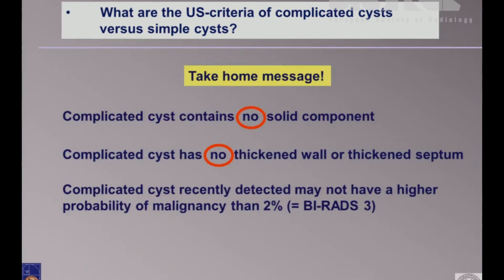The take-home message highlighting complicated cysts: a complicated cyst contains no solid components. A complicated cyst has no second wall or second septum. Complicated cysts, recently detected, may not have a higher probability of malignancy than 2%, so we can put them in the BIRADS 3 group. Otherwise, it has to be BIRADS 4 if something suggests the probability of malignancy could be higher.